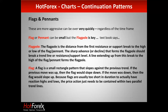I tend not to trade flags personally, but I know people who do — they wait for these little flags or pennants to form. The flagpole is key: it's the distance from the first resistance or support to the high or low of the flag or pennant. The sharp advance or decline forming the flagpole should be a break of a trend line or resistance/support. Flags have a small rectangle usually against the previous trend, needing two or three candles to form, showing the end of the trend — normally against the prevailing trend.